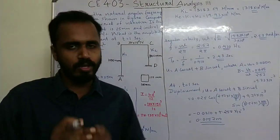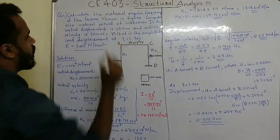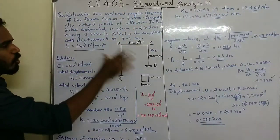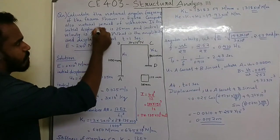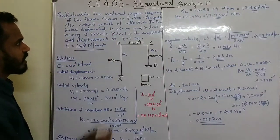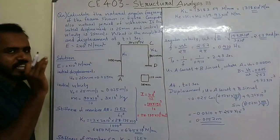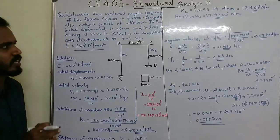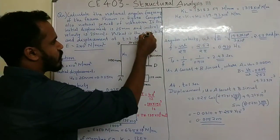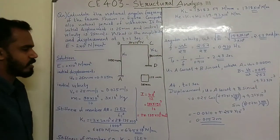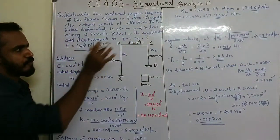How to calculate the natural angular frequency of the frame shown. Compute also the natural period of vibration. If the initial displacement is 25mm and initial velocity is 25mm per second, what is the amplitude and displacement at T equal to 1 second?